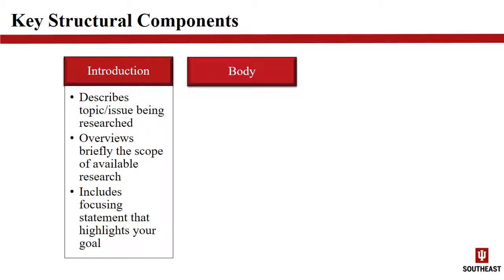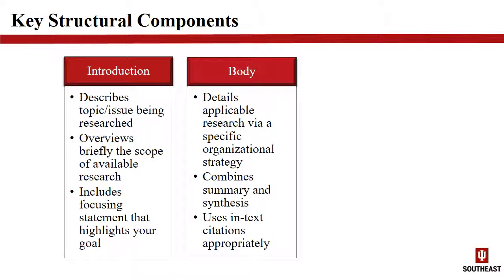The body of your literature review should use a single organizational technique as a lens that helps you describe and synthesize the research you have found. Remember that you must do more than summarize — you should work to build connections and describe how your sources relate and differ. The body of your literature review should also appropriately and completely use in-text citations according to the documentation style you have chosen. Because so much of a literature review will be the words of others, it is key that you use in-text citations to avoid plagiarism.